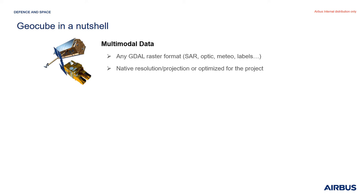In a nutshell, the GeoCube is a cloud native geospatial database designed to be easily deployed for a variety of Earth observation projects. The GeoCube is sensor agnostic — it can process any raster format readable by GDAL, in native resolution and projection, but it is also able to reprocess the data to be optimized for the project itself.